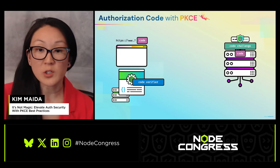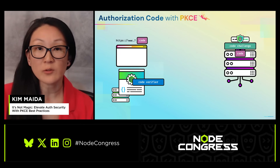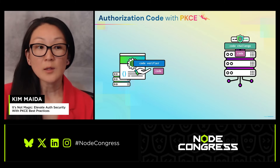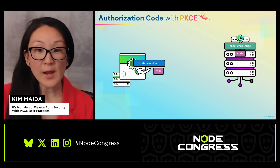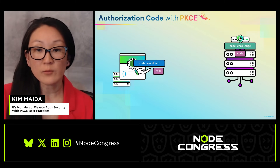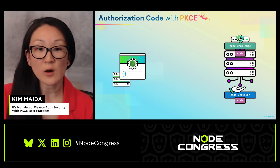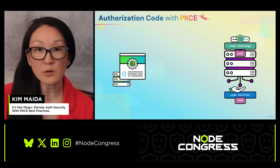PKCE prevents code injection by binding the authorization request to the token request. So once the app has the code, the code verifier and the token request are sent to the authorization server's token endpoint.